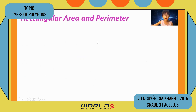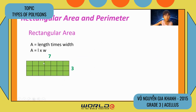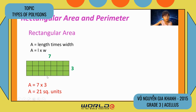Rectangle area and perimeter. The area of a rectangle is length times width. Here is my rectangle. The width is seven and the length is three. Area equals seven times three. Area is 21 square units.